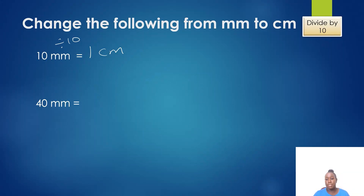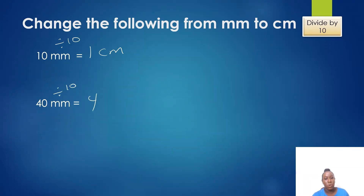Now I have 40 millimeters and I would like to change it to centimeters. How do I do that? I divide by 10. 10 into 40 is 4, so I am getting 4 centimeters.